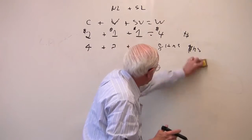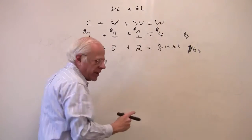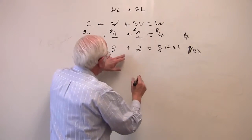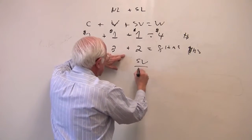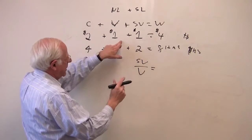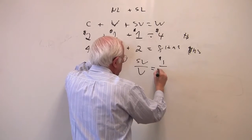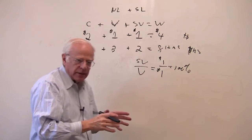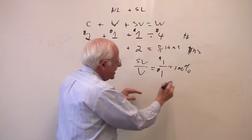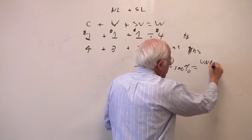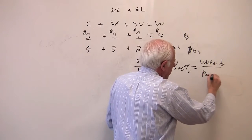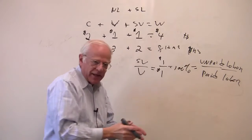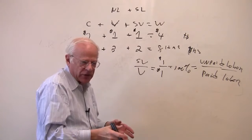Let me now develop these indices. The first one that Marx talks about is what is called the rate of exploitation, which is the relationship of your surplus labor to the value of labor power. In this particular case, in dollar terms, it would be $1 over $1, or 100%. The rate of exploitation. Let's use a more provocative term: this is the relationship of unpaid over paid labor — an index of the rate of exploitation.